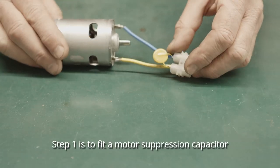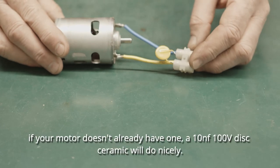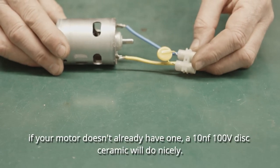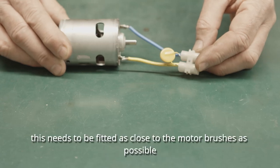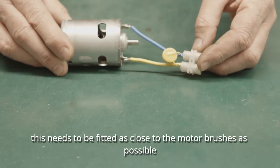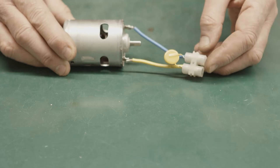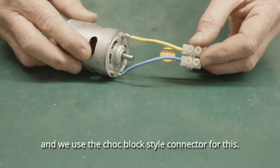Step one is to fit a motor suppression capacitor. If your motor doesn't already have one a 10nF 100V disc ceramic will do nicely. This needs to be fitted as close to the motor brushes as possible and we use a chop block style connector for this.